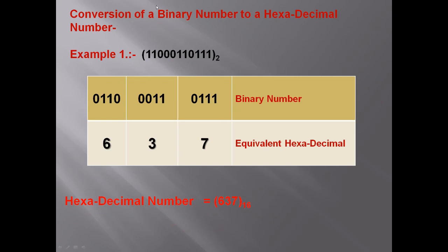Next is binary number to hexadecimal conversion. In hexadecimal conversion, we make groups of 4 bits. We group the binary digits into blocks of 4: the first block, the second block, and the third block. For the last group, if there are only 3 numbers, we add a 0 from the left side.